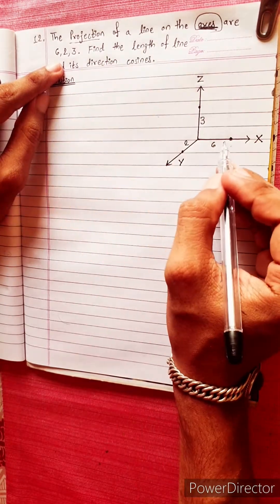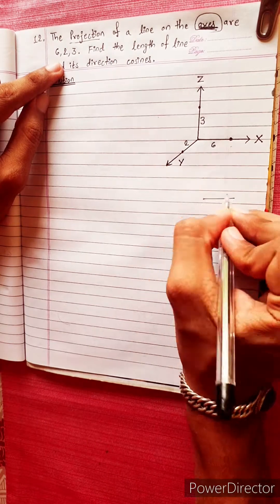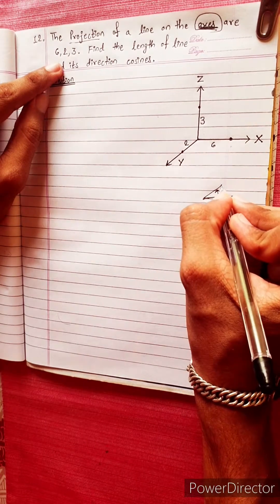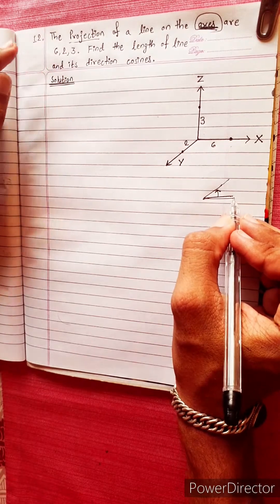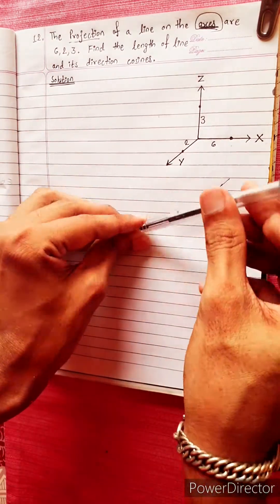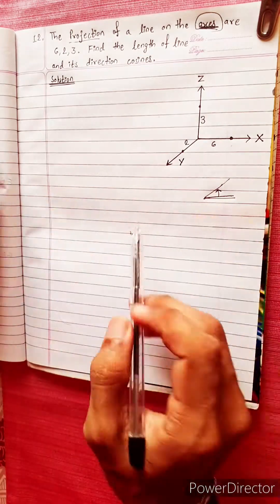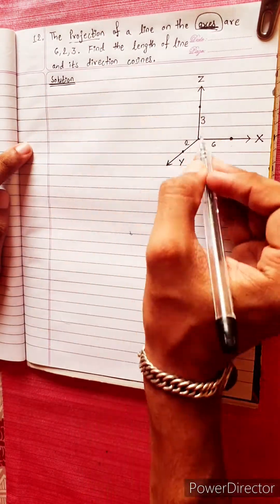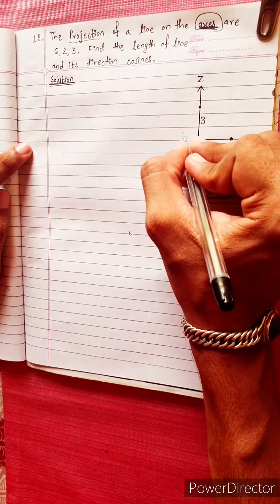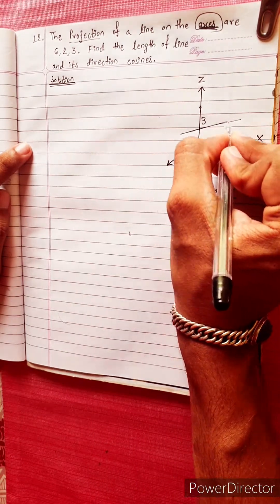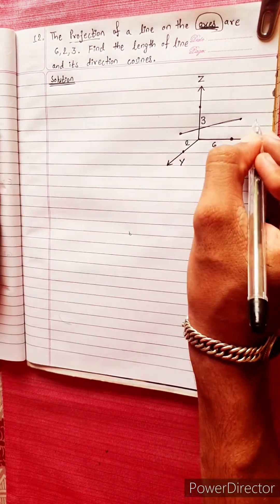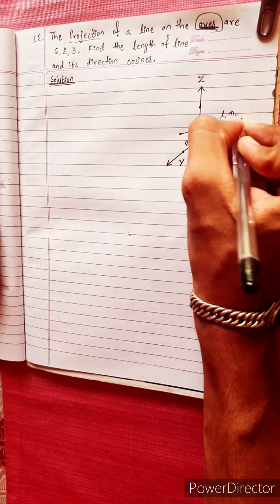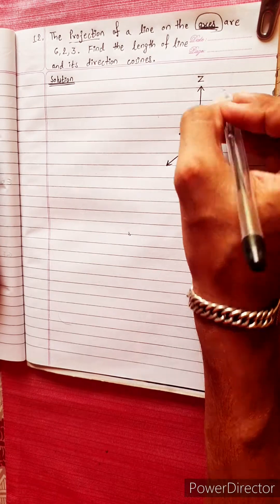Then we have to create a projection. With a small projection product, we have to set a projection. This is a projection — the projected way of the length of a line and its direction cosine. In this three-axis system, this is the line, and this is the length of the line.